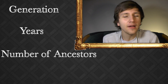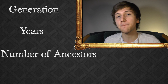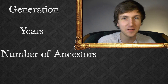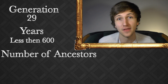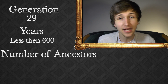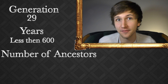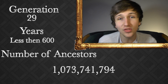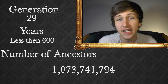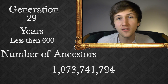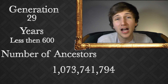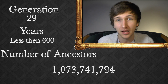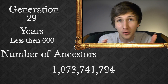Which generation is it when you finally reach a billion people necessary for you to exist today? You don't have to go far — it's only four generations after the 25th generation. The 29th generation in a perfect world would have 1,073,741,794 people, and that in most cases wouldn't even be 600 years. Meaning that since the time Columbus reached the New World, there would have to have been that many people having offspring in order for you to exist.